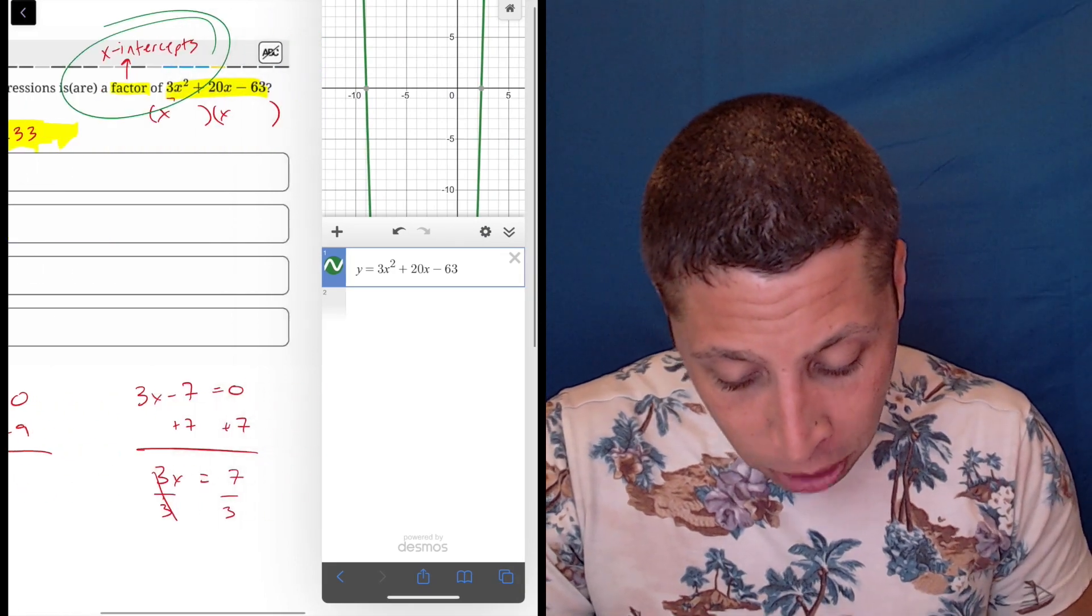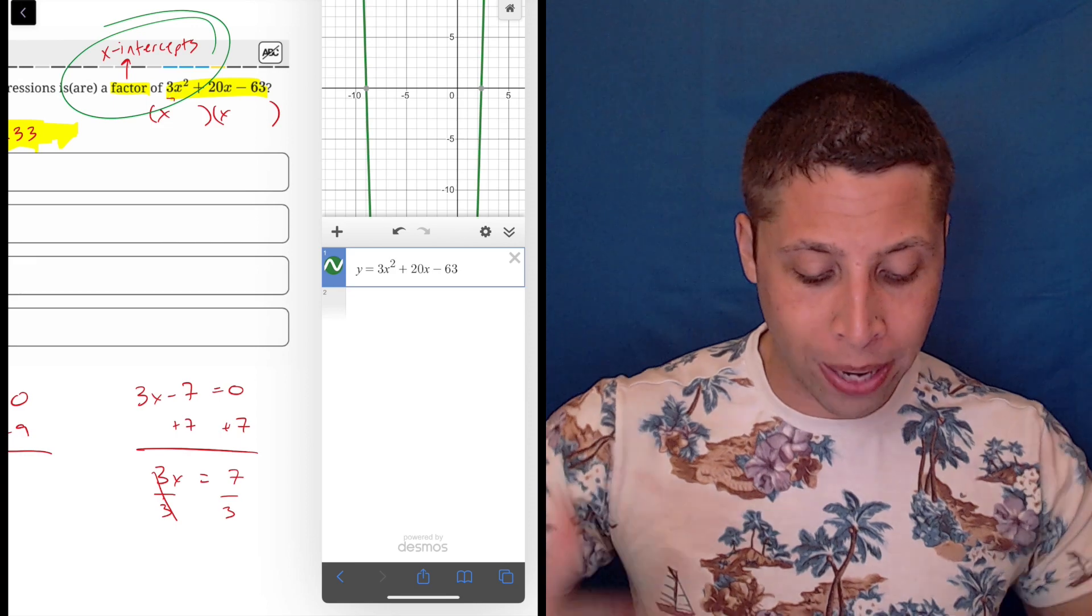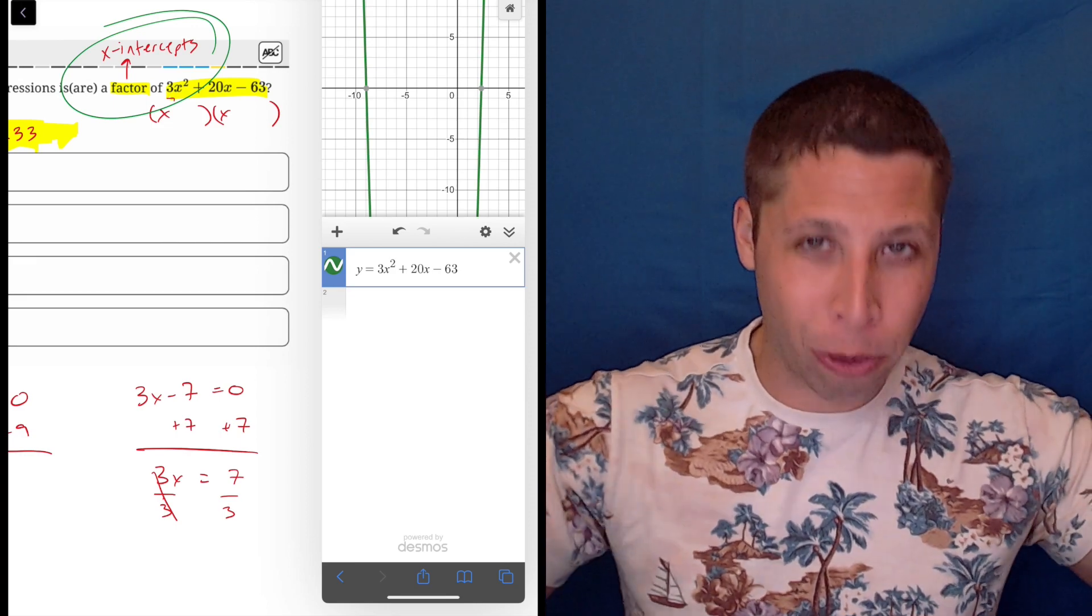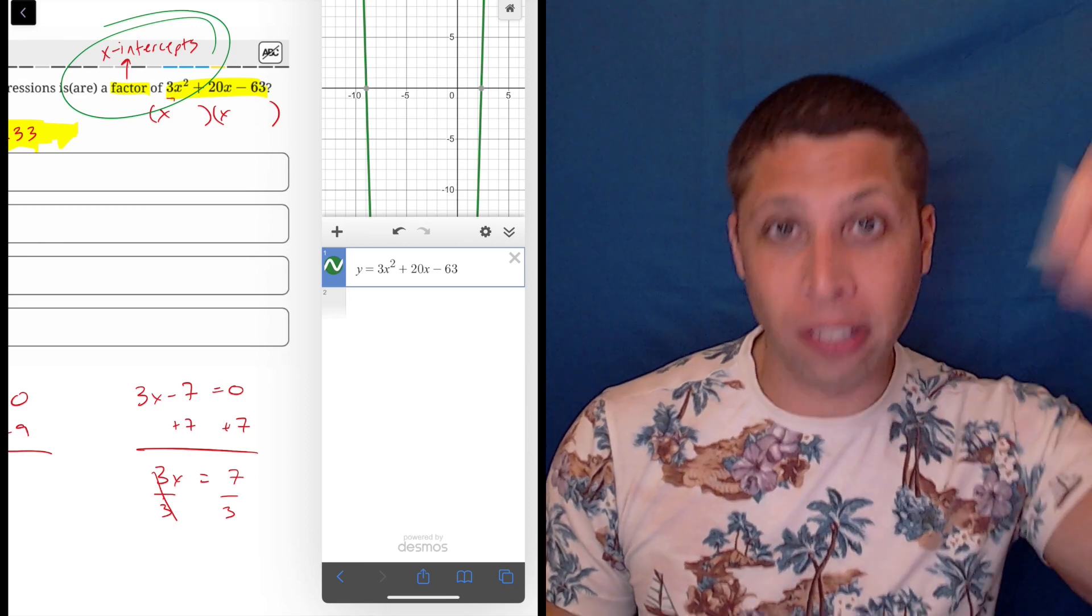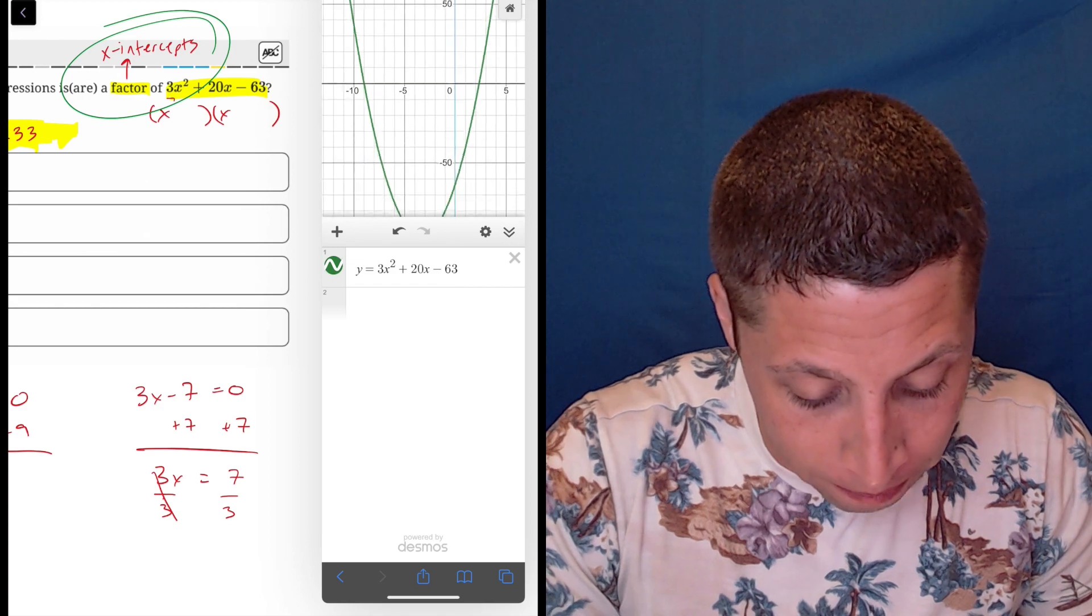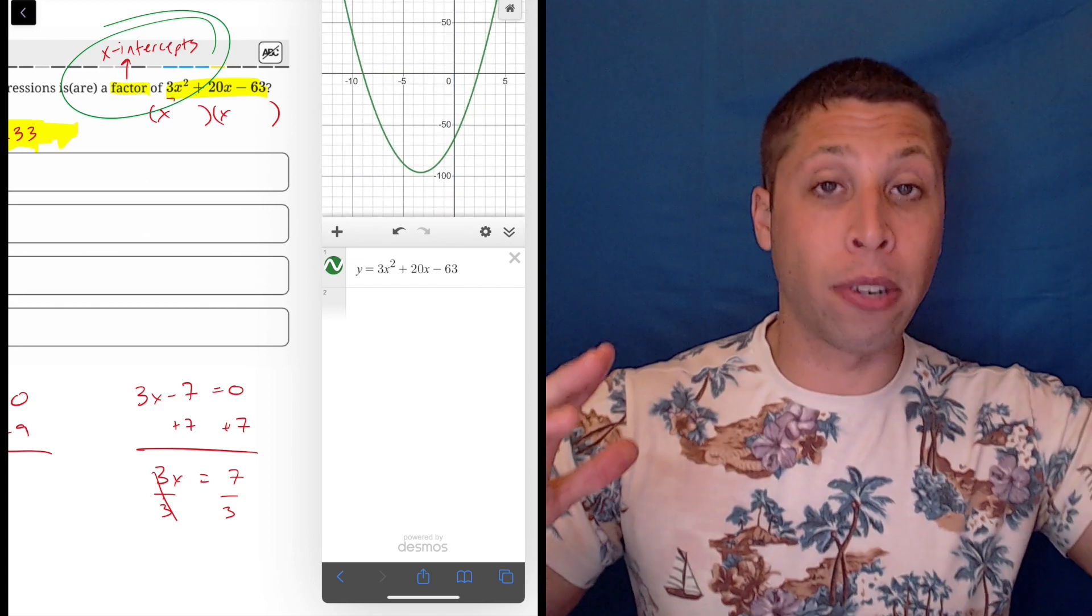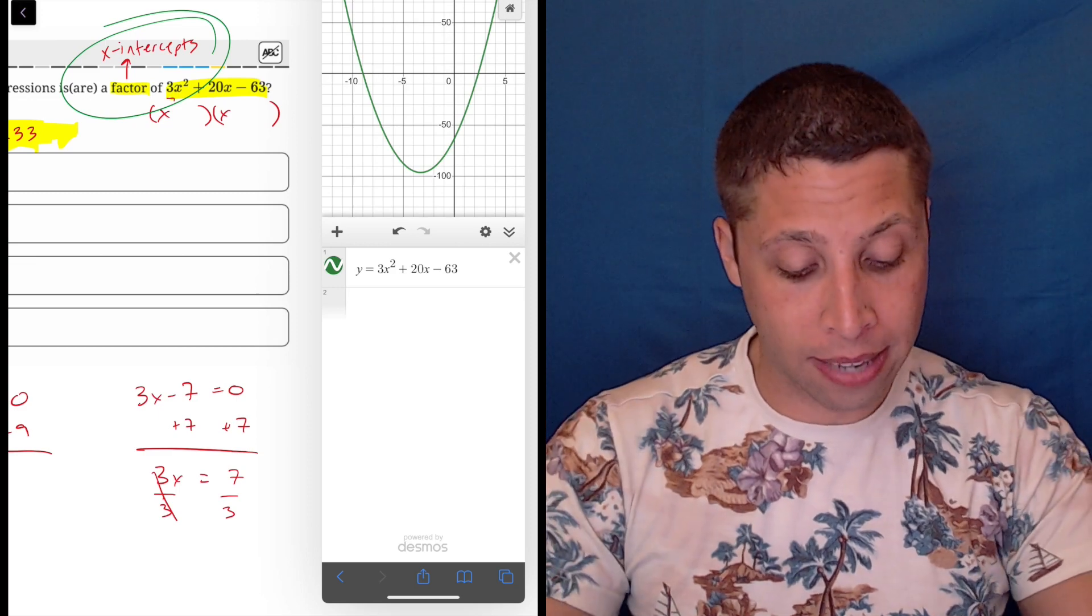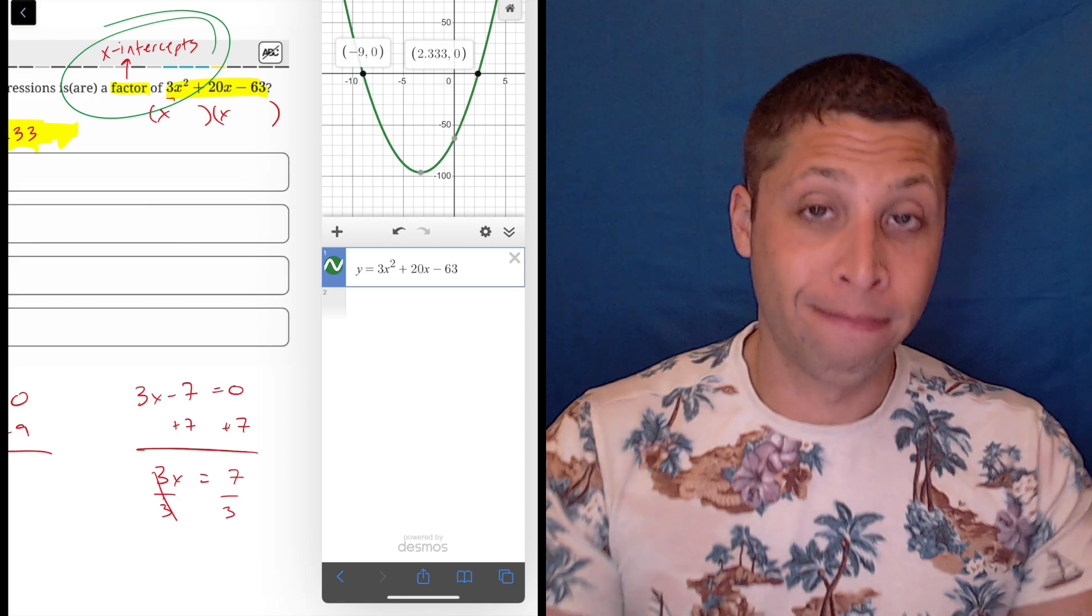If I had just put 3x squared plus 20x minus 63, the calculator wouldn't know what to do with that. So I had to turn it into an actual graphable function. So I put that y equals in front. So now it looks like a parabola, and the calculator knows what to do. And just to kind of show you that it's a parabola, just to smush it, there it is. So it doesn't matter how far down it goes. What matters is where it hits the x-axis. And that was easy to find and to click and solve.